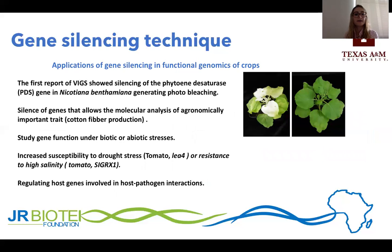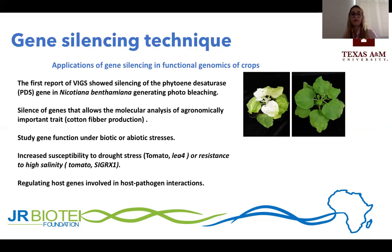Here are some applications of gene silencing in functional crops. The first report of VIGS was in Nicotiana benthamiana with the silencing of a gene called PDS. The silencing of PDS generates a photobleaching phenotype, as you can see in the picture, and this is now a common positive control when conducting VIGS experiments.